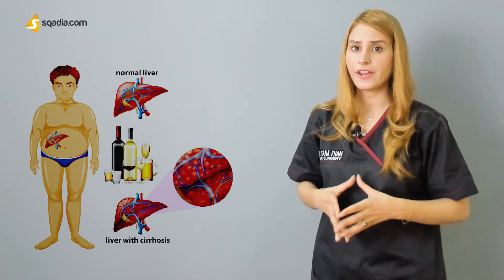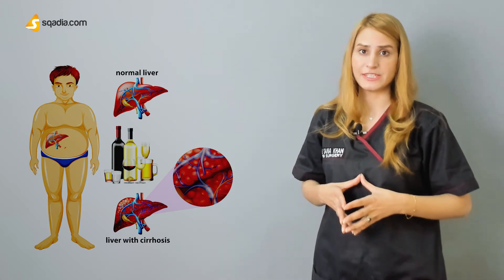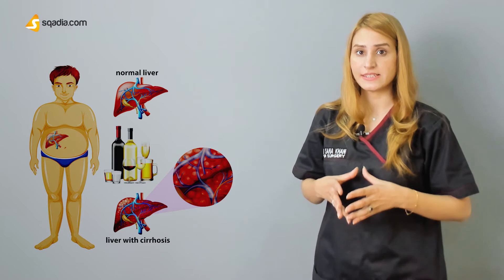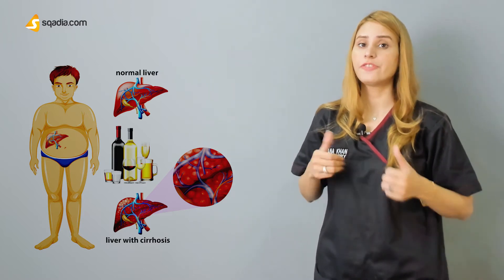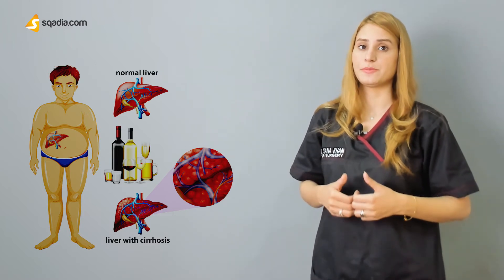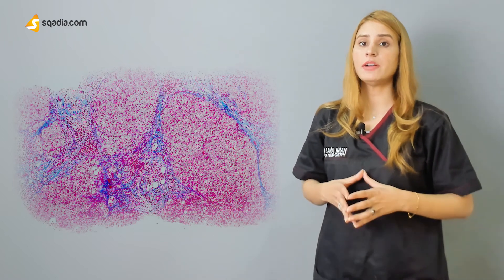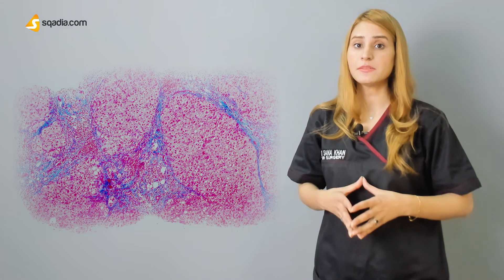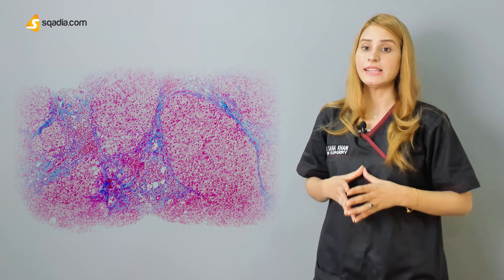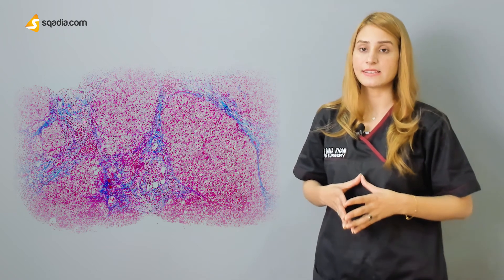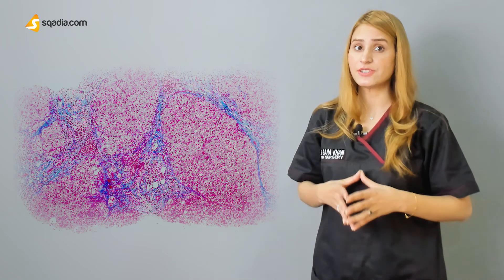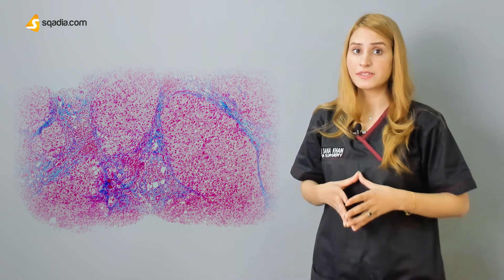Commonly it is caused by alcohol, hepatitis B, and other fatty liver diseases. If the cause is removed at this stage, the changes are fully reversible. The pathological hallmark of cirrhosis is the development of scar tissue that replaces normal parenchyma.